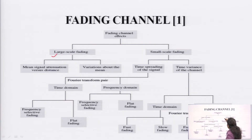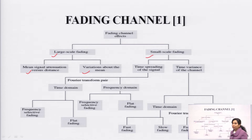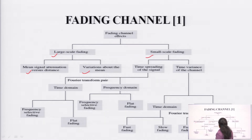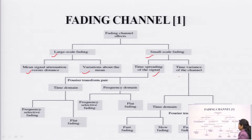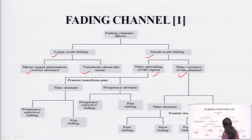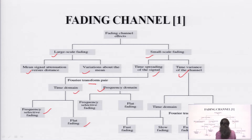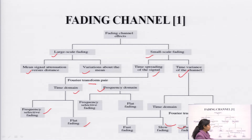This one is the large scale fading, this one is the small scale fading. In case of large scale fading, it is mean signal attenuation versus distance — this is variation about the mean. Whatever mean you have calculated, denoted by mu of a particular signal, is considered for calculating large scale fading. In case of small scale fading, this is divided into time spreading of the signal and time variance of the signal.